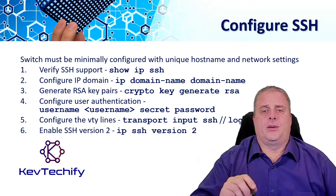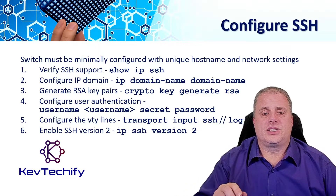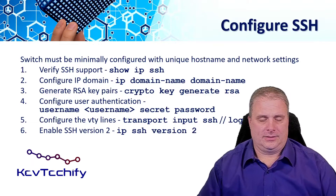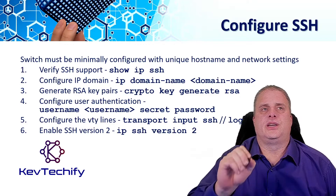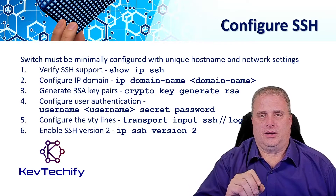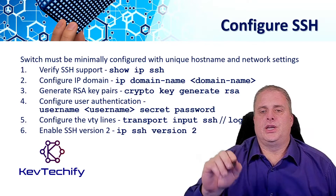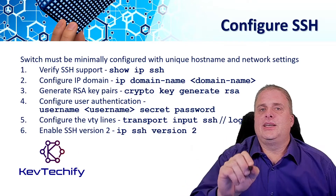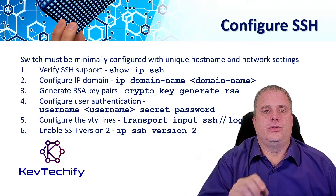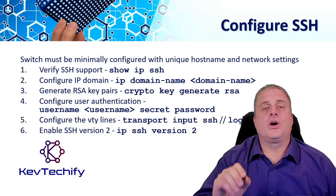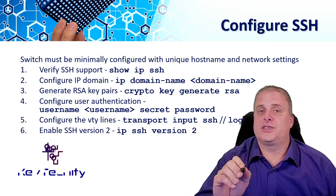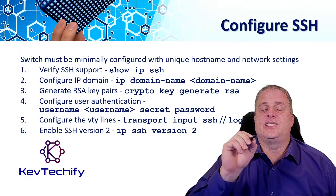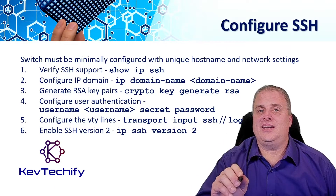Then we set up a domain name. The domain name is part of the cryptography process, and you set it using the ip domain-name command followed by your domain name. The third step is to generate your RSA key pair using the crypto key generate rsa command. I suggest using at least a 1024 modulus for your encryption — if you use the default 512, you won't support SSH version 2, only version 1. So when I generate my RSA crypto key pair, I always make sure it's at least 1024, sometimes 2048.